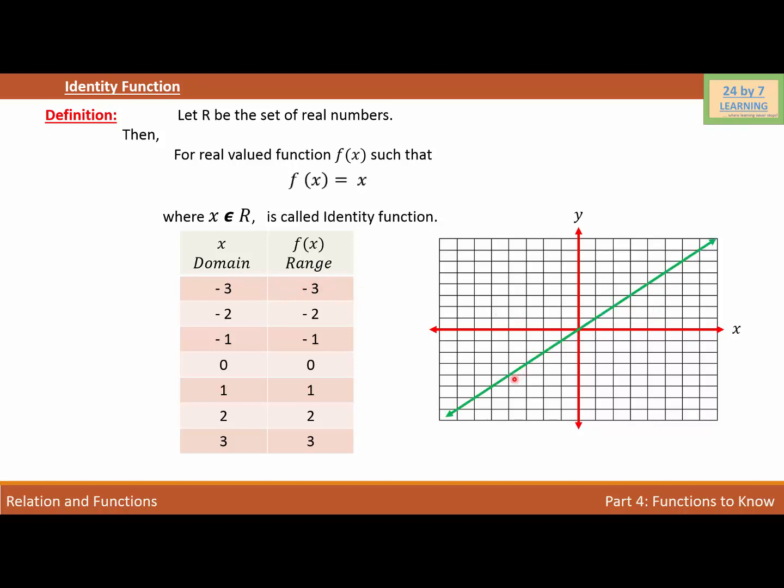If I do that, I will get a straight line, and the equation of this line is f(x) = x. This is the identity function.